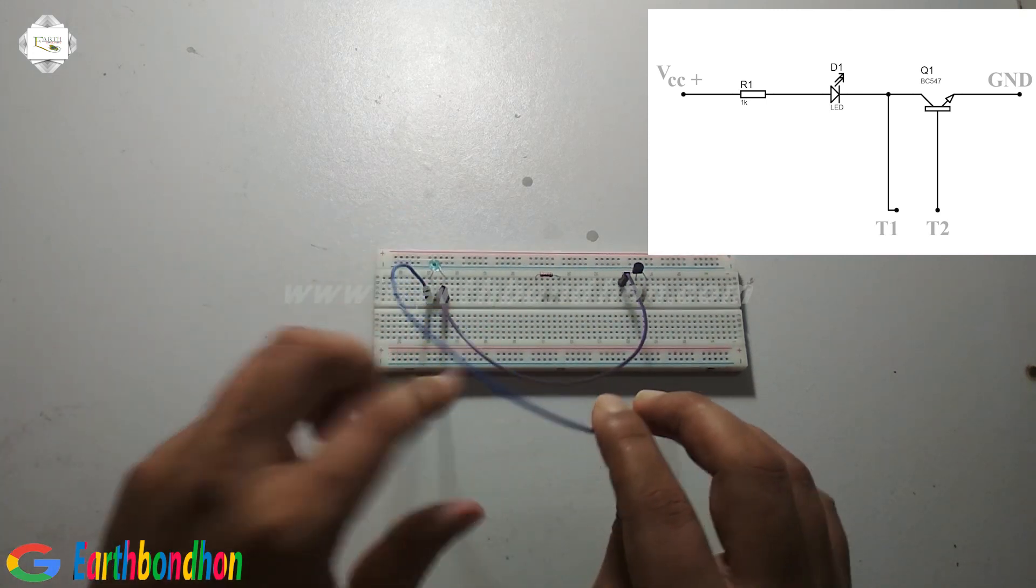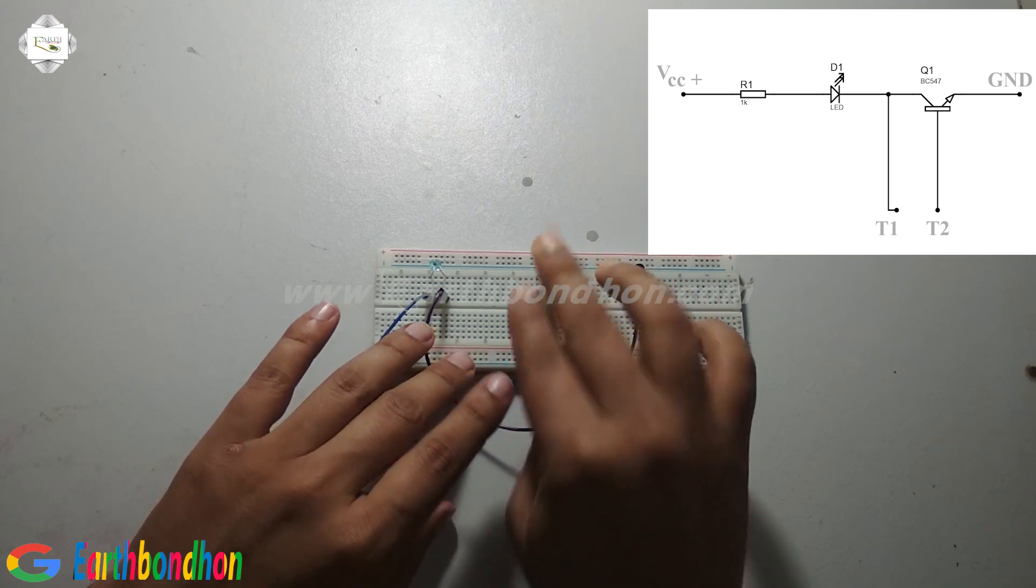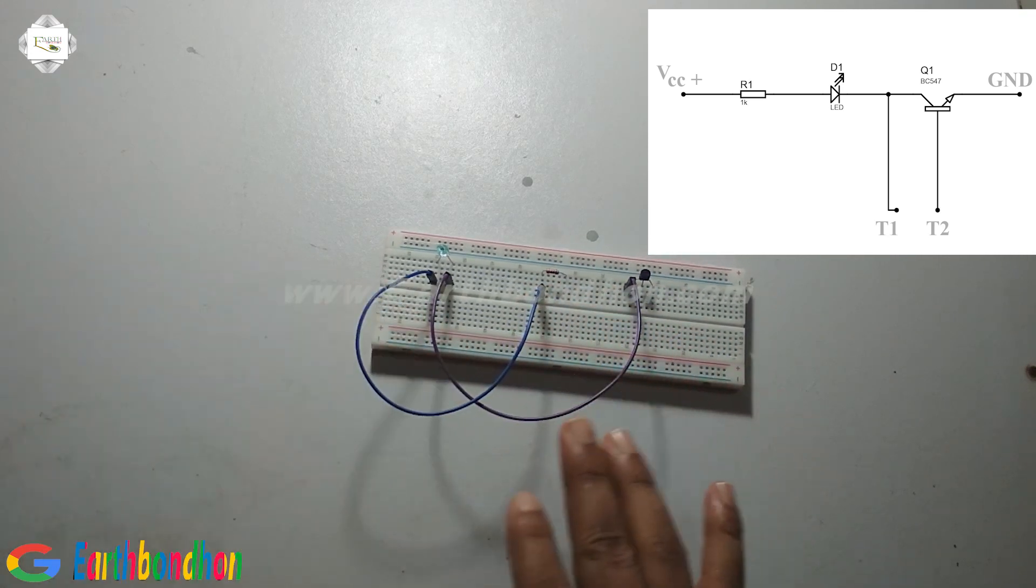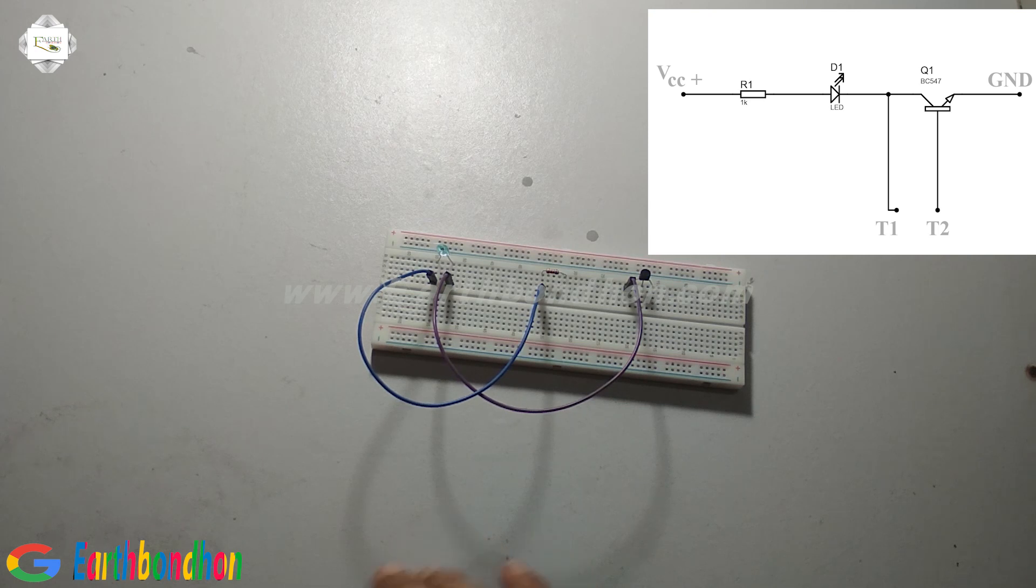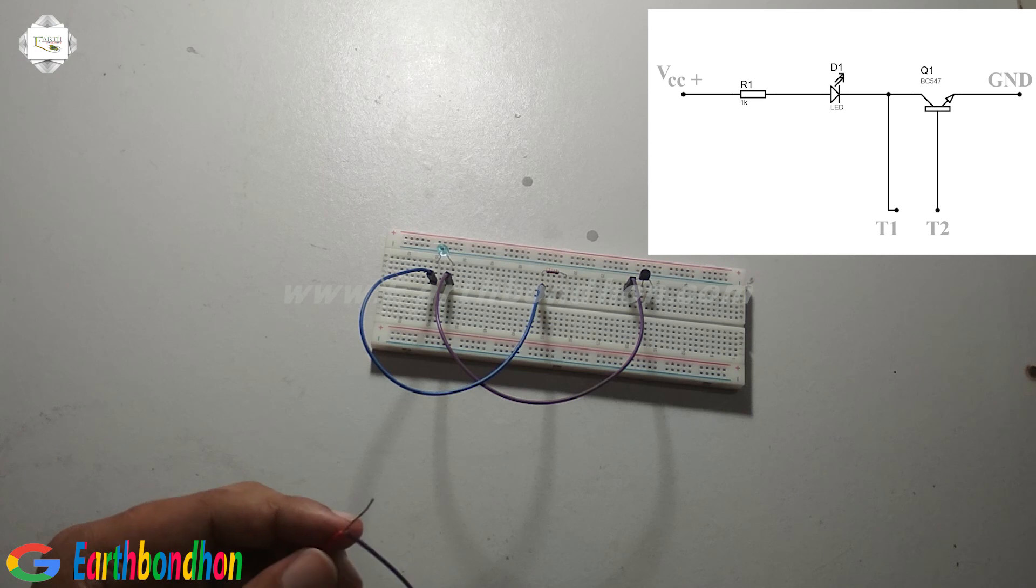The resistor. OK, this is the voltage supply, 9 volt supply.